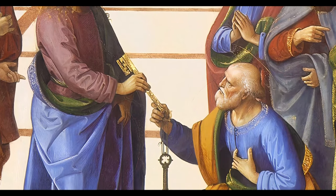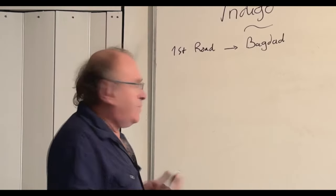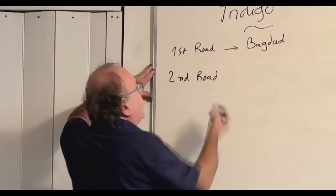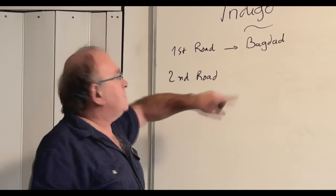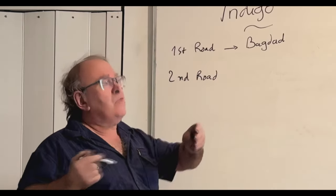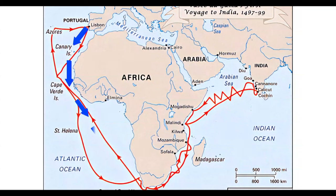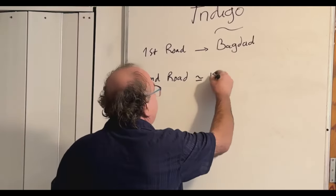It's a kind of confidential thing, but it is well known. At some period, the second road for importing the indigo was a very long road by the sea, going all along. The boats could go all along Africa to the Cape of Good Hope, and then in the Indian Ocean. They say that the first coming back from India with indigo was around 1515.